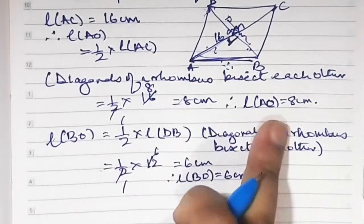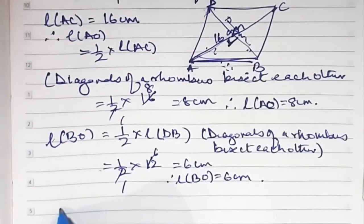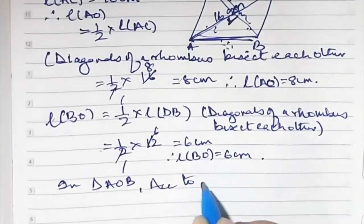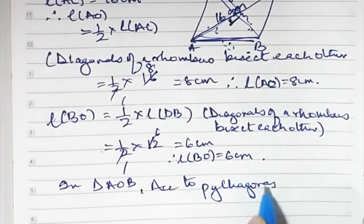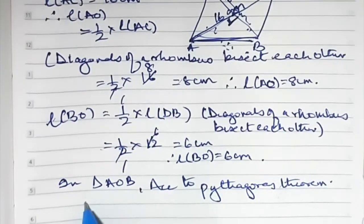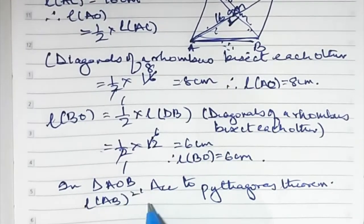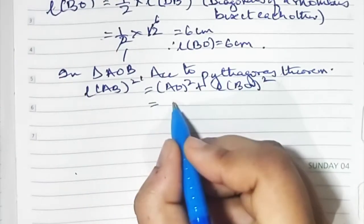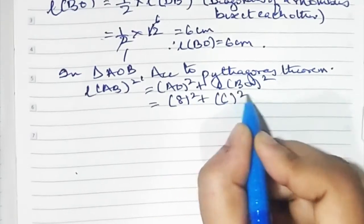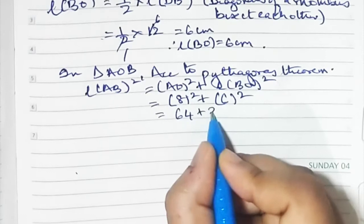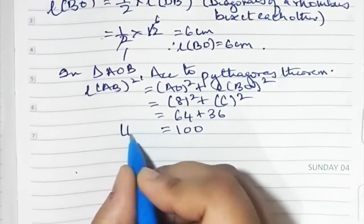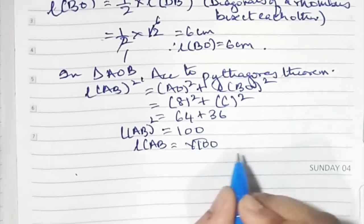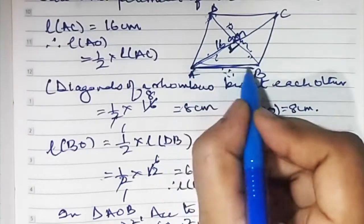We got AO = 8 centimeters and BO = 6 centimeters. Now take triangle AOB. According to Pythagoras theorem: AB² = AO² + BO² = 8² + 6² = 64 + 36 = 100. So AB² = 100.